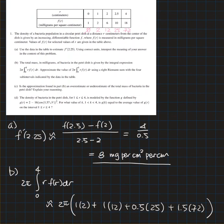Number d: the density of bacteria in the petri dish for 1 to 4 is modeled by the function g defined by g of r equals 2 minus 16 cosine 1.57 square root of r cubed. For what value of k, 1 to 4, is g of k equal to the average value of g of r on the interval of 1 to 4?